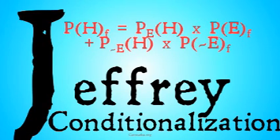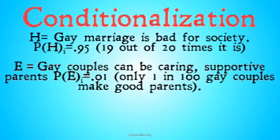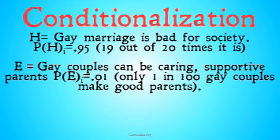In general, this seems like a pretty stable principle, and it's pretty theoretically elegant. Let's take a look at how it could be applied to a specific example. Imagine H is the hypothesis 'gay marriage is bad for society.' P(H) initial equals 0.95 — you believe that 19 out of 20 times gay marriage is going to be bad for society. Take evidence E as 'gay couples can be caring, supportive parents.' The probability of E initial for you is 0.01 — only 1 in 100 gay couples make good parents. These comparisons give you a sense of where you might come up with these degrees of belief, since nailing down an exact degree of belief like 0.95 or 0.01 can seem very odd.